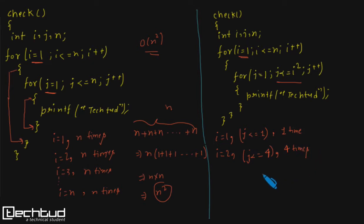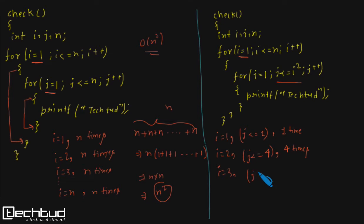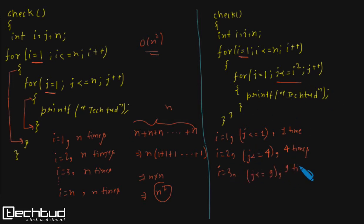For i equals to three, because of this condition, it will become three squared, which is nine. So you can predict that for i equals to three, the inner loop will execute a total of nine times.